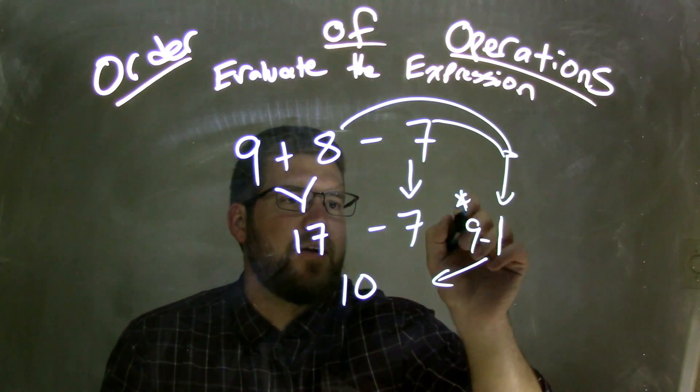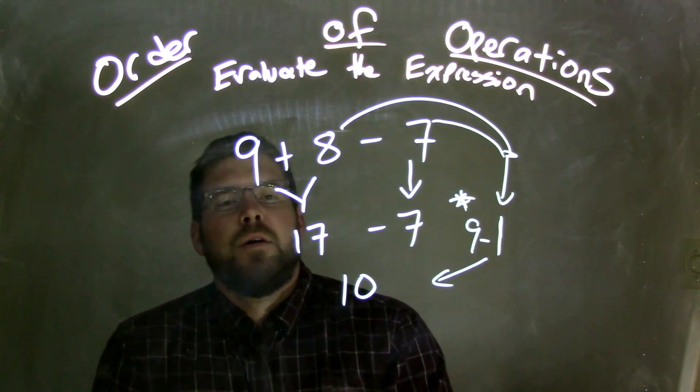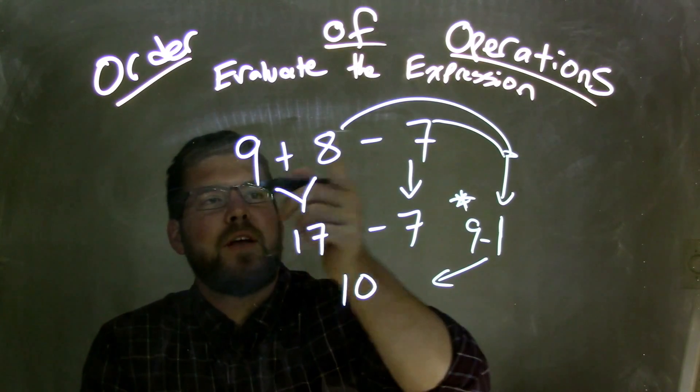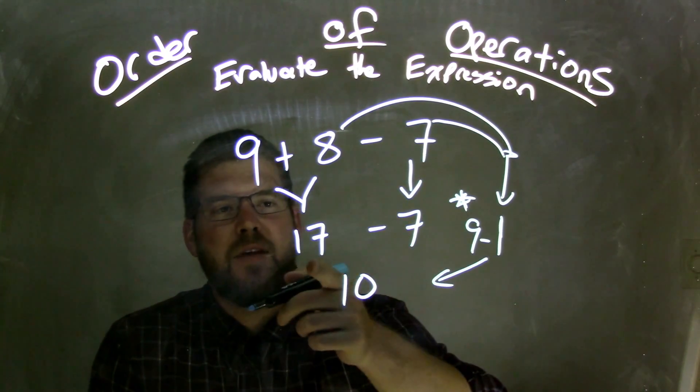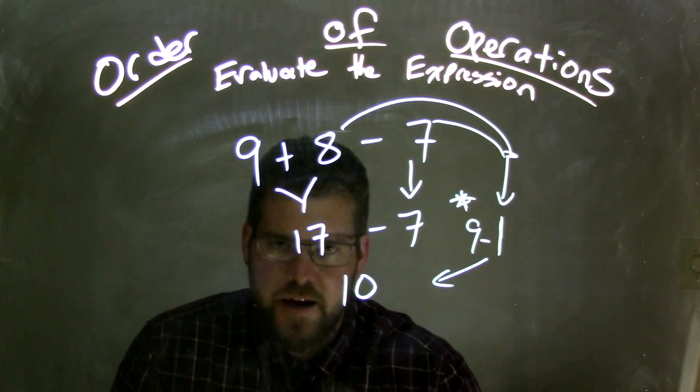But the way we did it: 9 plus 8 minus 7, 9 plus 8 is 17, bring down the 7, and 17 minus 7 is 10.